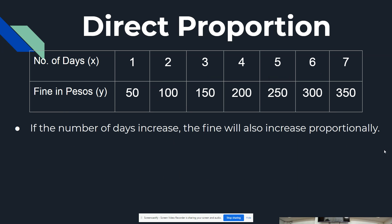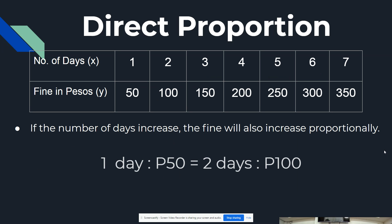So in direct proportion, the number of days increases and the fine will also increase proportionally. One day is to 50 pesos, and two days is to 100 pesos. That is how direct proportion can be shown.